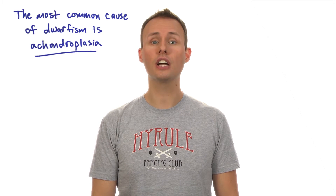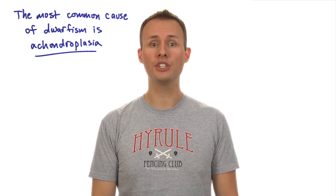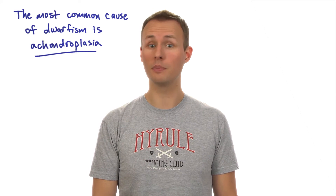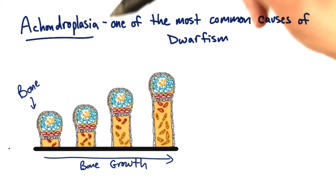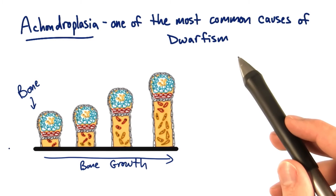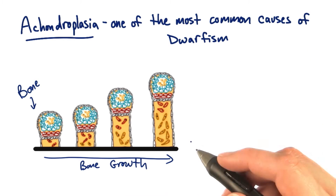In the case of dwarfism, the most common cause is a dominant allele that causes achondroplasia, which is inhibition in bone growth. Achondroplasia is one of the most common causes of dwarfism.